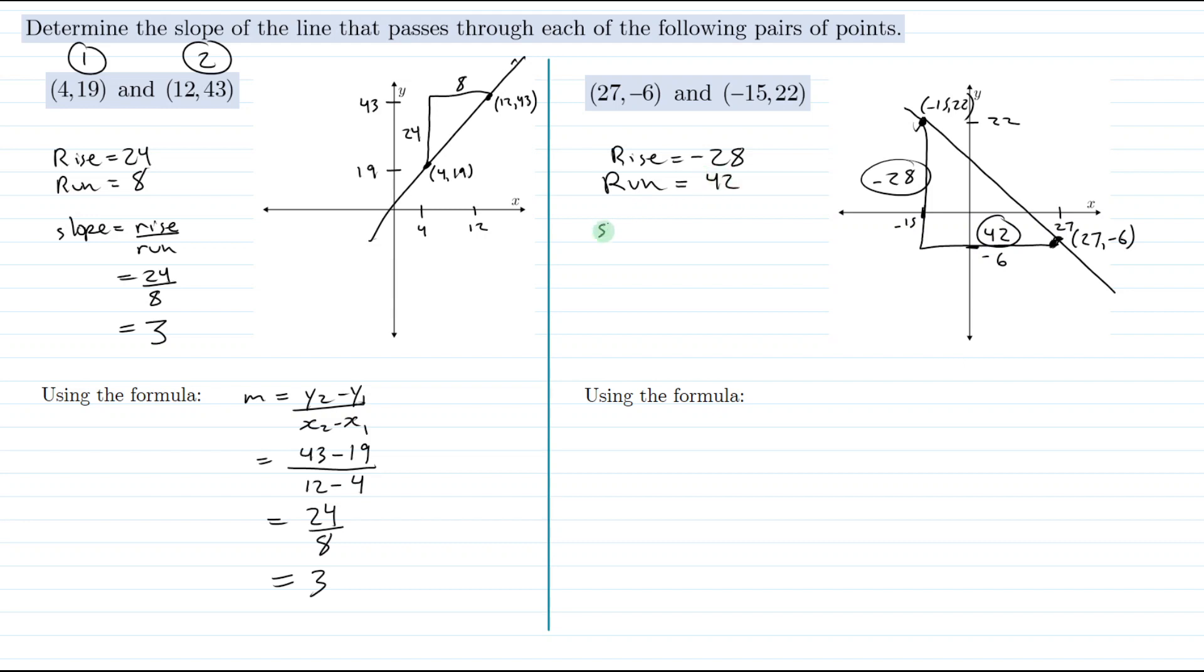So our slope would just be rise over run, which is -28 over 42. Now can we reduce that fraction? Absolutely. Both of these numbers are divisible by 14, which is the biggest one. So if we divide the numerator by 14 we get 2, and if we divide 42 by 14 we get 3.